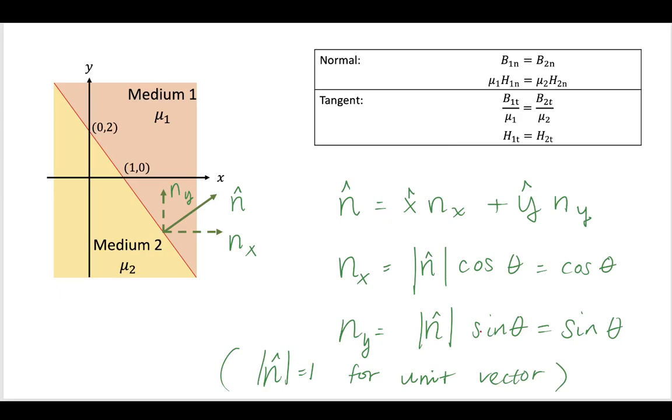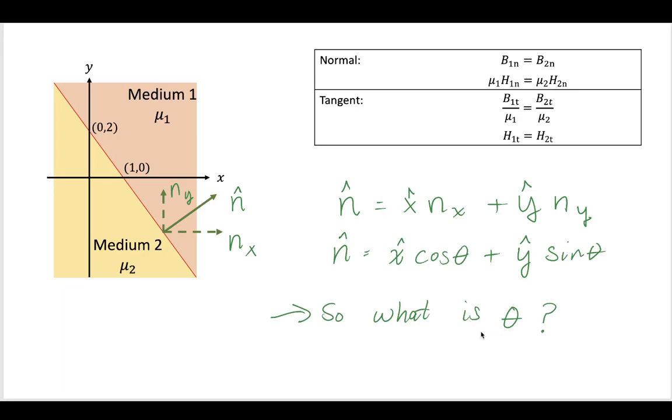Since n hat, the normal unit vector, is a unit vector, it's equal to 1, and that just reduces to cosine theta and sine of theta. So what is theta? How can we find that? Let's do a little bit of trigonometry.